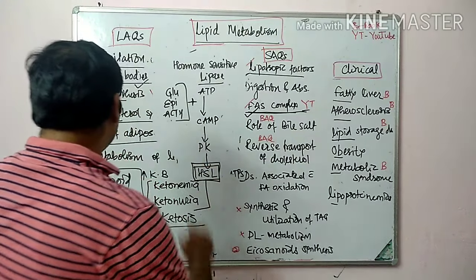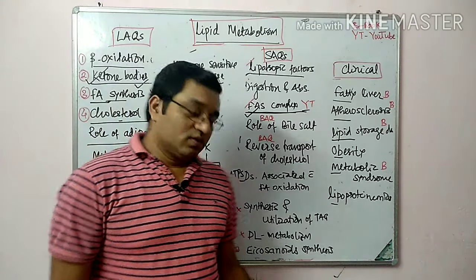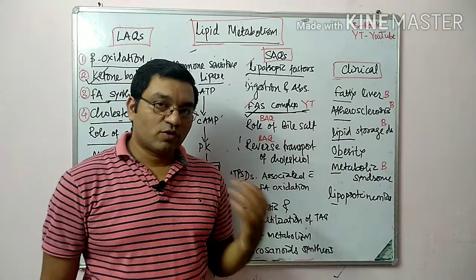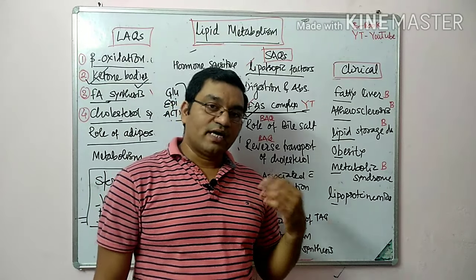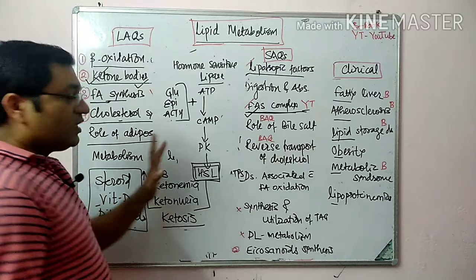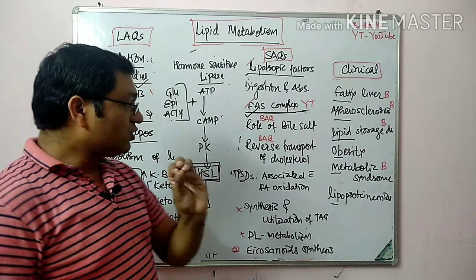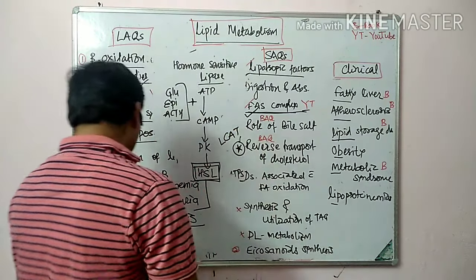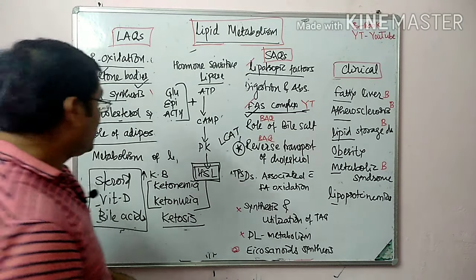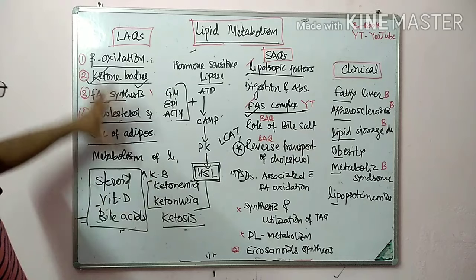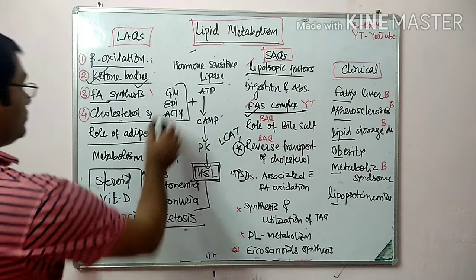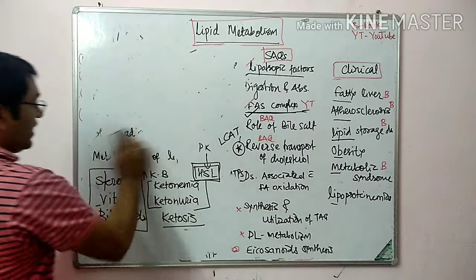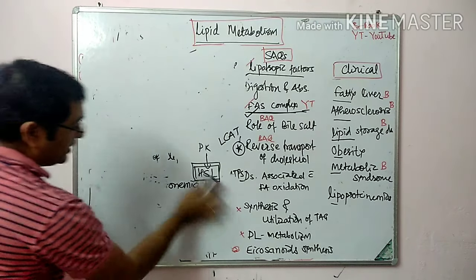The metabolism of lipoproteins is also an important topic, including metabolism of chylomicrons, formation of LDL, VLDL, and HDL. Two important aspects are the reverse transport of cholesterol and the role of L-CAT. Of all the questions discussed, these four — beta oxidation, ketone bodies, fatty acid synthesis, and reverse cholesterol transport — are very important.